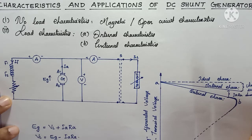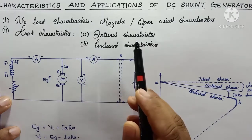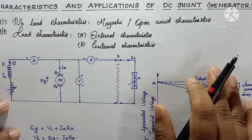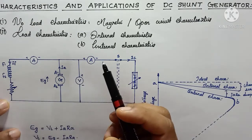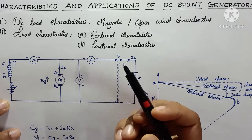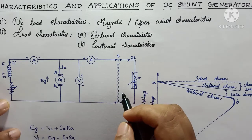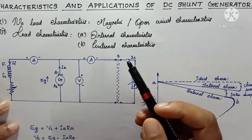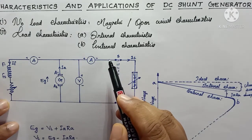Here we will discuss the load characteristics of a DC shunt generator, which includes internal characteristics and external characteristics. To plot these characteristic curves, you can use the experimental setup shown. This setup can be used for a DC series generator as well. For OCC (no-load characteristics), the switch must be in the open condition; for load characteristics, the switch must be closed so that load current flows through the circuit.